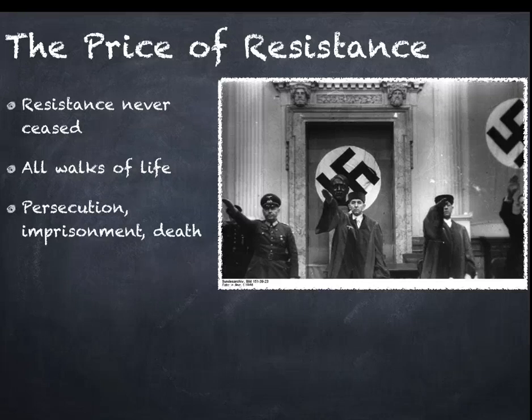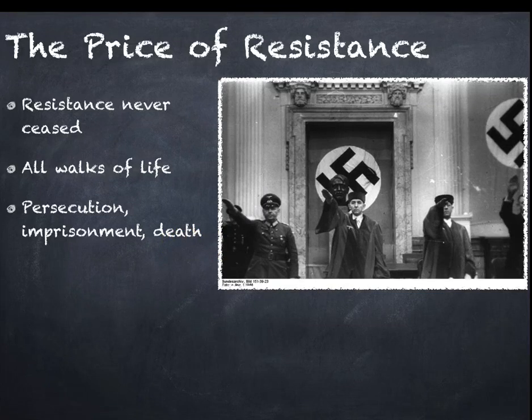Later on in the Nazi regime, somebody was actually executed for telling a joke. Hitler and Goebbels are on a balcony — this is later in the war when things aren't going well. Hitler turns to Goebbels and says, 'What would cheer people up in Berlin?' And Goebbels says, 'Why don't you jump?' The person who told that joke was executed.